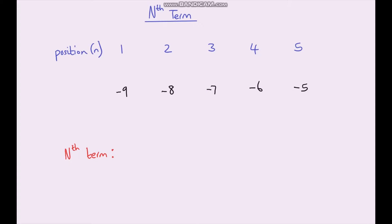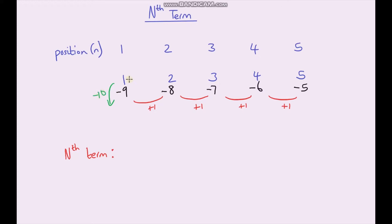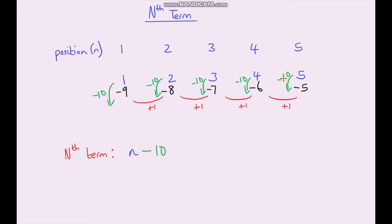Let's have another go — have a go at this one. To go from negative 9 to negative 8 we're adding on 1, so we're adding on 1 each time, meaning we'll be using our 1 times table. The adjustment to go from 1 to negative 9 is subtracting 10, and from 2 to negative 8 is also subtracting 10. So our nth term is 1n, or just n, minus 10. You only need to work out the adjustment for the first term, since they're always the same in an arithmetic sequence — that adjustment forms the second part of our nth term.